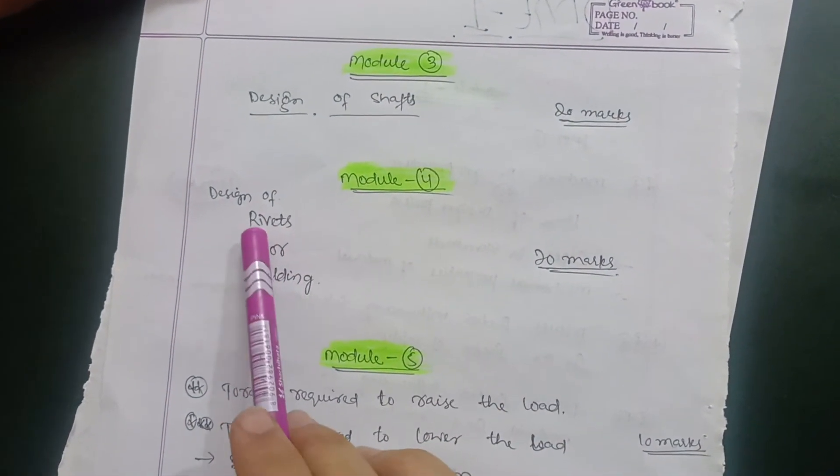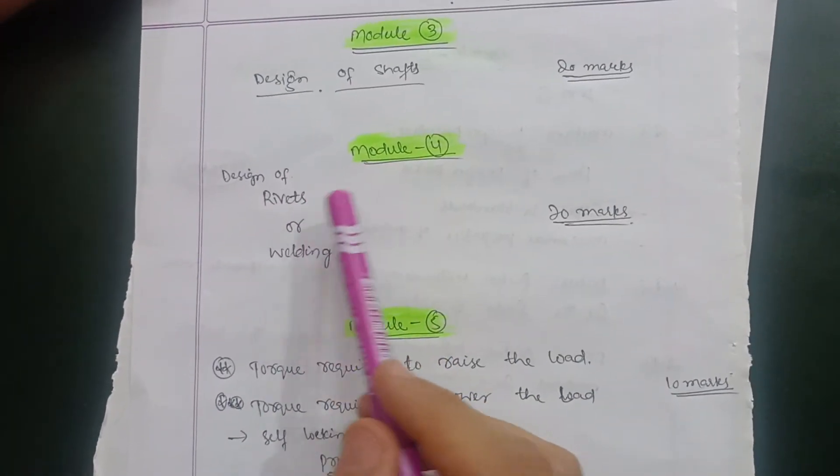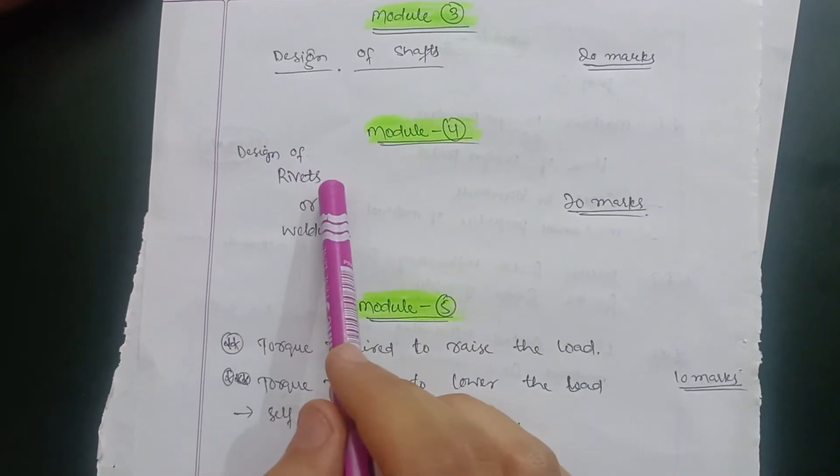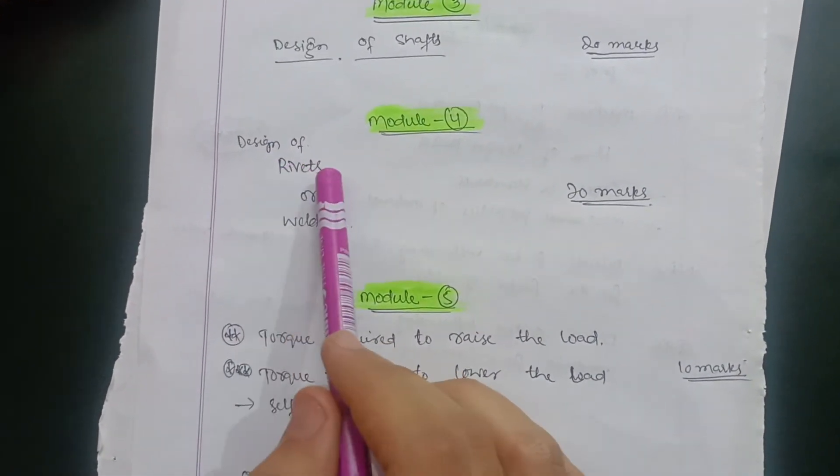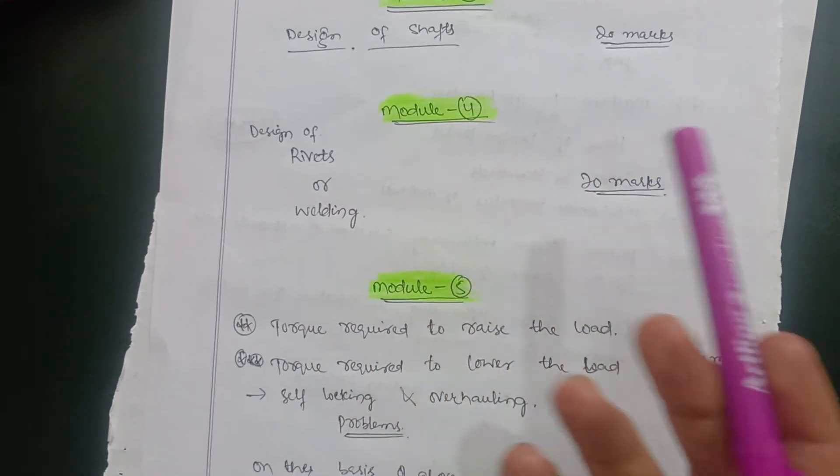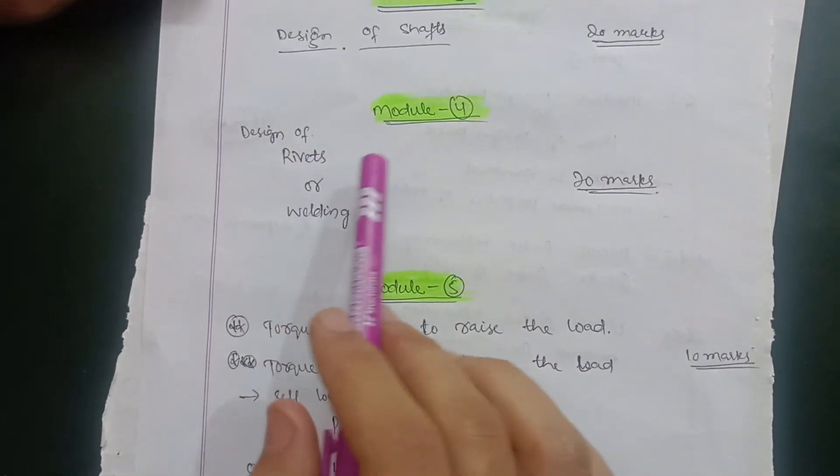In module fourth, there are two concepts: design of rivets and welding. Whichever is convenient to you, I will prefer you go for rivets - rivets are easy, the design procedure is easy. If you are able to do welding problems also, it is according to your own choice. It depends upon your choice which you choose in this particular module.